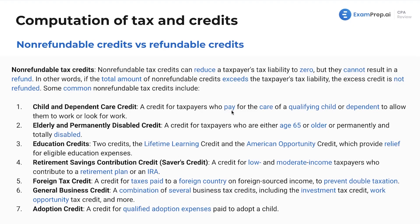The child and dependent care credit is for taxpayers who pay for the care of a qualifying child or dependent to allow them to work or look for work. We've also got the elderly and permanently disabled credit, which is for taxpayers who are either age 65 or older or permanently and totally disabled. These credits are designed to help those who need extra help — those over 65, disabled individuals, children, and dependents.